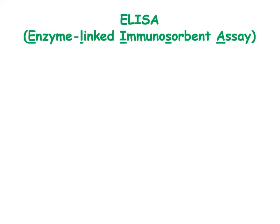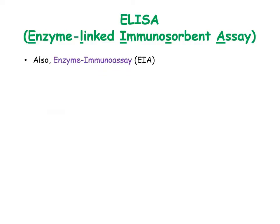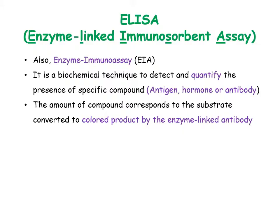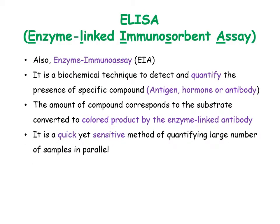ELISA, or enzyme-linked immunosorbent assay, is also known as enzyme immunoassay. It is a biochemical technique to detect and quantify compounds like antigens, antibodies, and hormones. The amount of compound in the sample corresponds to the amount of substrate converted to colored product by enzyme-linked antibody. ELISA is a quick and sensitive method to quantify a large number of samples in one go, and has successfully replaced radioisotope-based radioimmunoassay, or RIA.